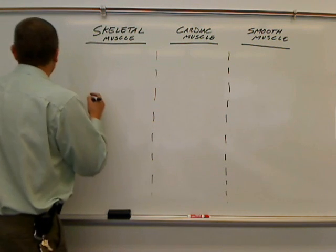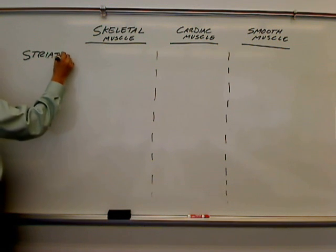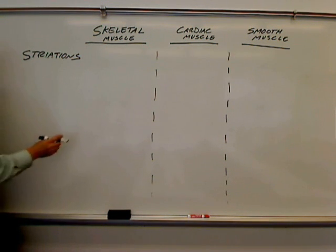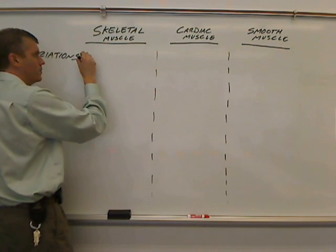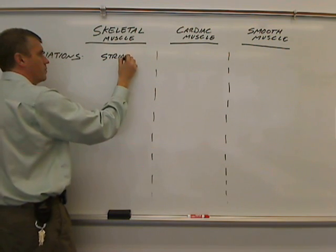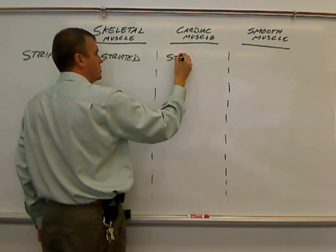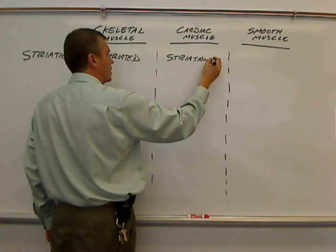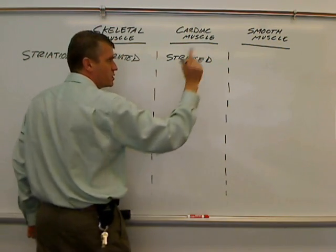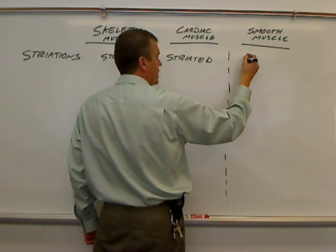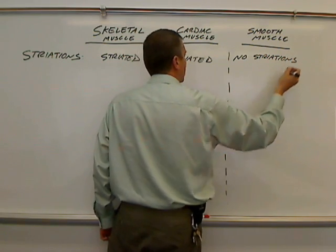First, let's talk about striations. Skeletal muscle has striations — in other words, it is striated. Cardiac muscle also has striations. However, smooth muscle, as the name tells you already, has no striations. It's smooth.